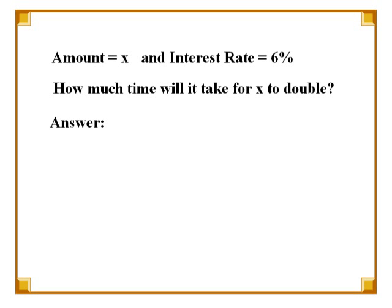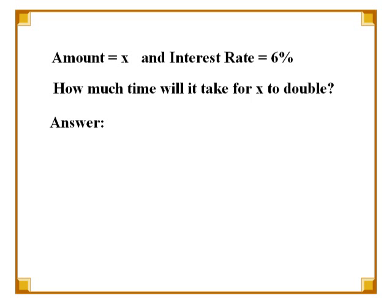Suppose you have an amount x invested at 6% interest, and you want to calculate how soon x will double to 2x. All you need to do is divide the number 72 by the interest rate, which is 6. This gives us 12, which is the number of years required to double your money.